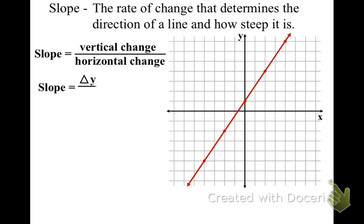Another way of thinking of slope is the change in y over the change in x. If we take a look at this point and then another point up here — we're starting at (0, 1) and ending at (4, 7). So the change of y: I started at 1, now I'm at 7. Then the change of x: I started at 0 and now I'm at 4. We're looking at how our points change on our line.